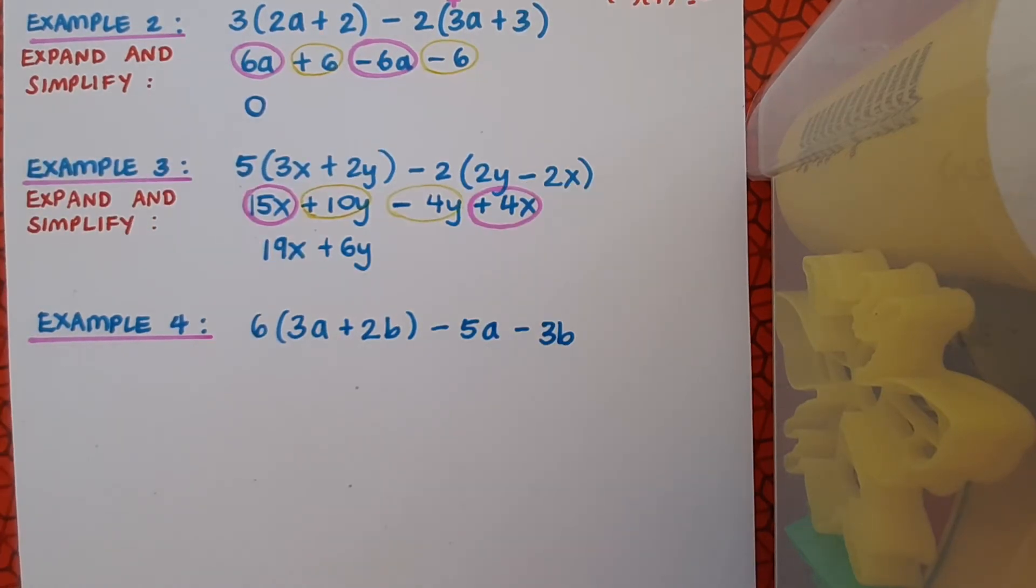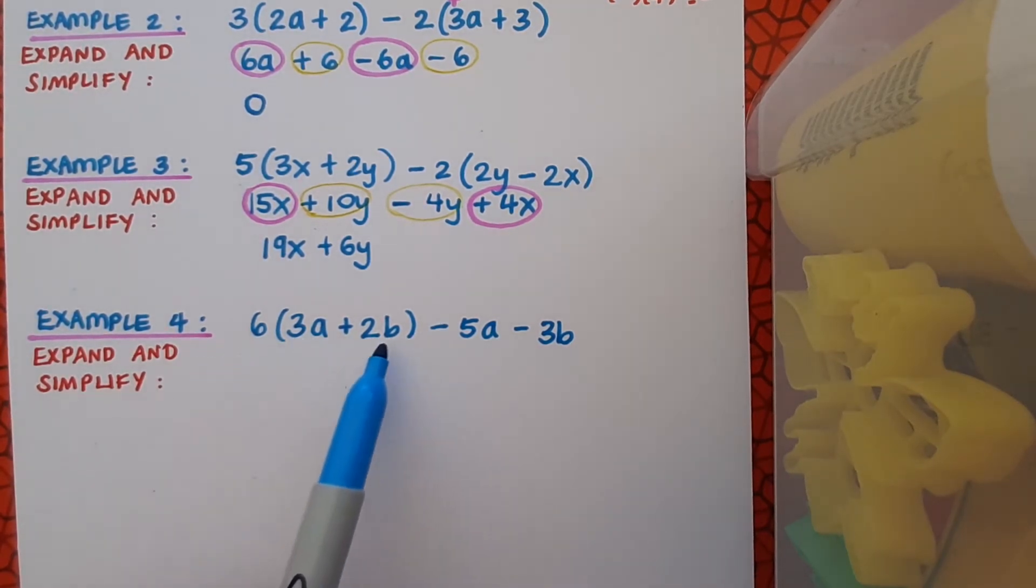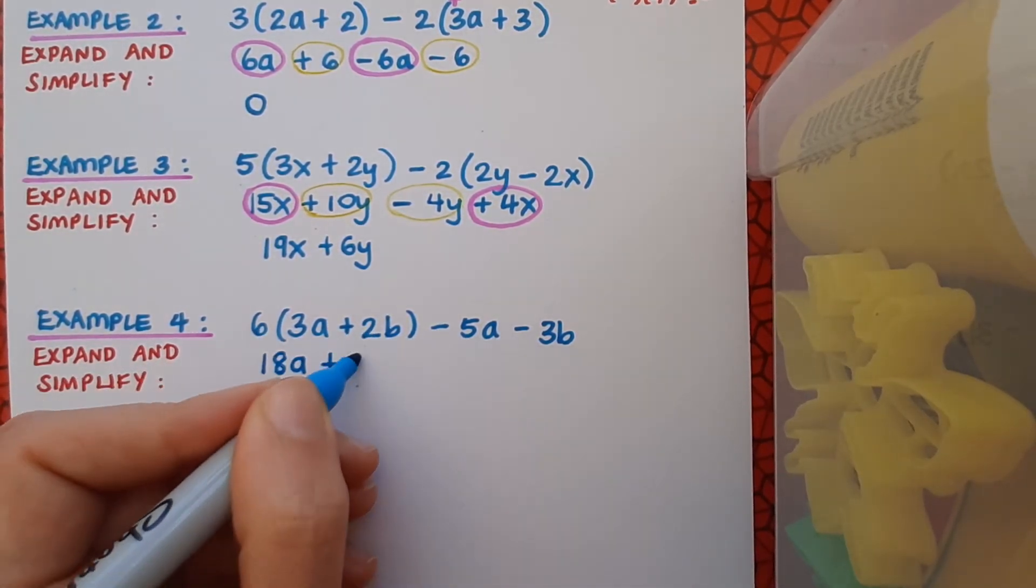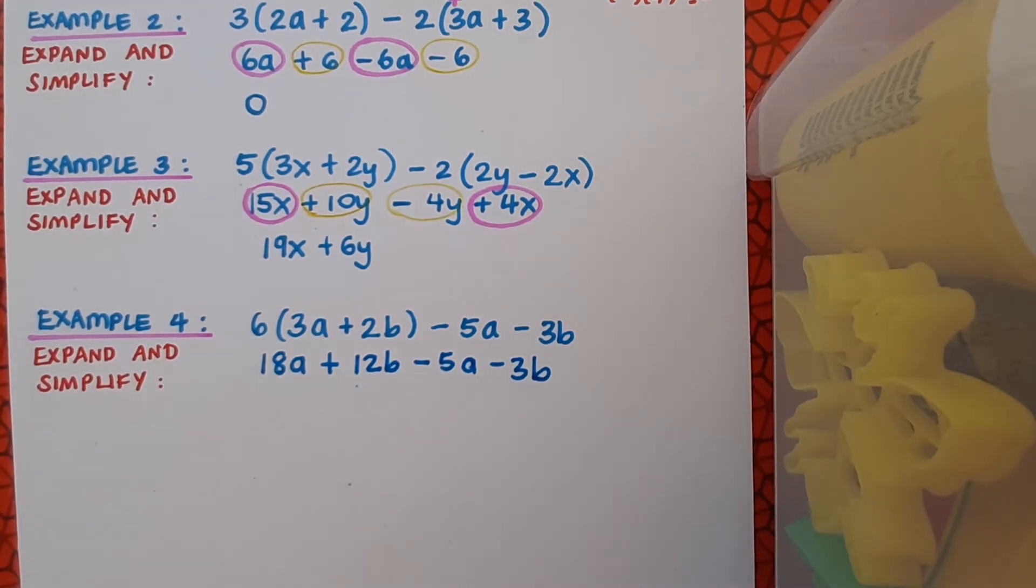Let's look at example 4. This one looks a little bit different. It still has the same instruction to expand and simplify. But just on first glance, I notice that there's a bracket here at the start. There isn't a bracket at the end. So how do I deal with this? Well, a 6 is the term directly in front of this bracket, so I'll multiply it in like normal. There's no brackets over here, but these terms are still part of the expression, so they'll just get written on the end. 18a, 6 by 2b is plus 12b, minus 5a, minus 3b. They're still part of the expression, they just didn't have anything to multiply by.